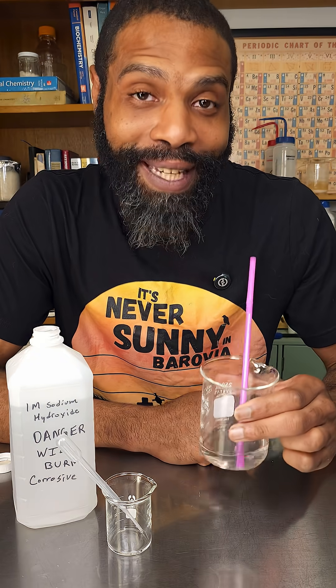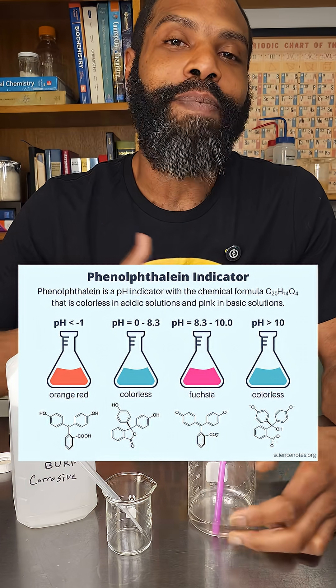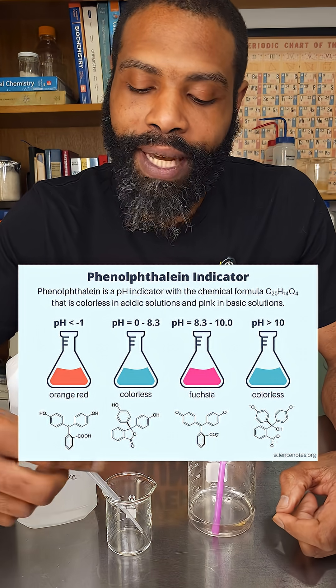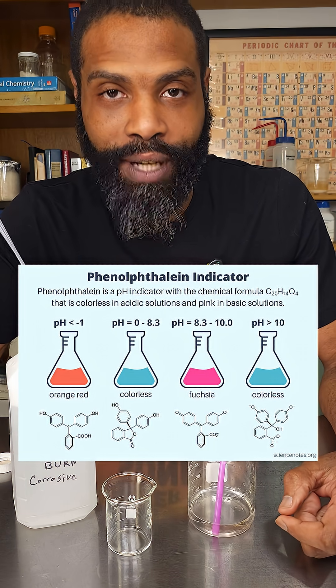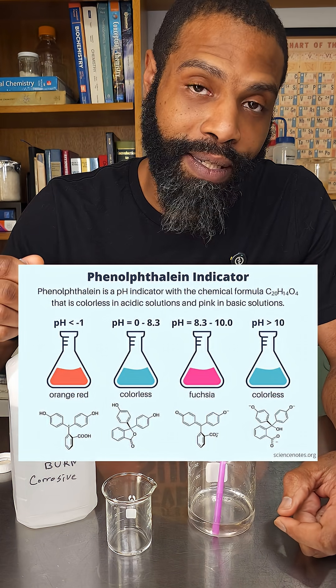This water has phenolphthalein in it. Phenolphthalein is a pH indicator — one of those molecules that can change its color depending upon how much acid or base is around.